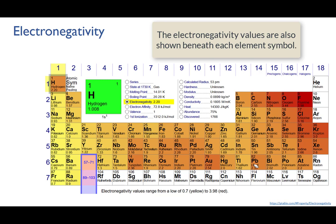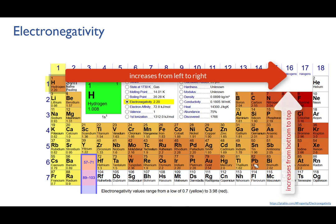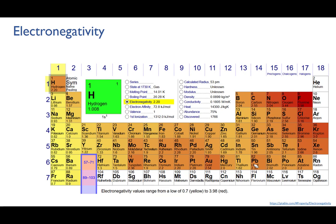First, electronegativity increases from left to right across the periods, and increases from bottom to top of each group. Much the same trend as ionisation energy.